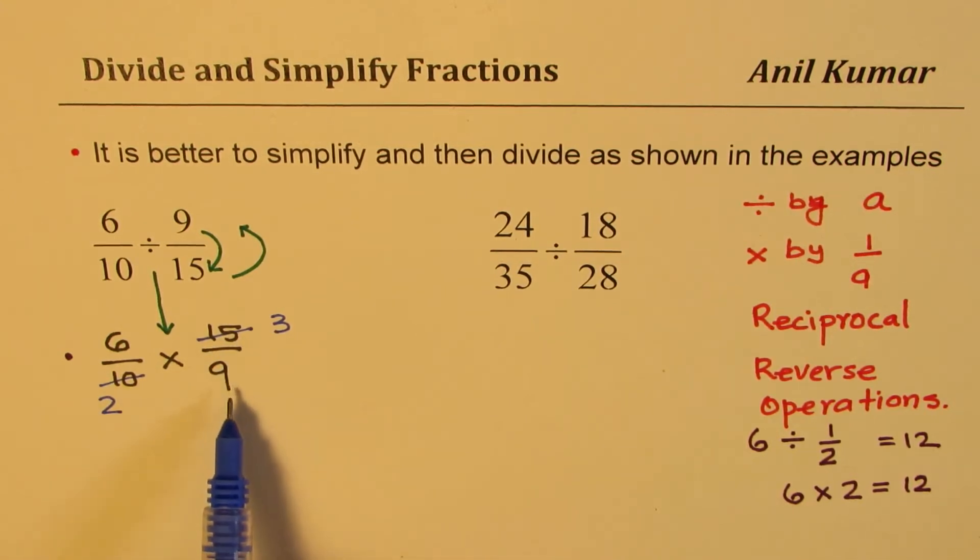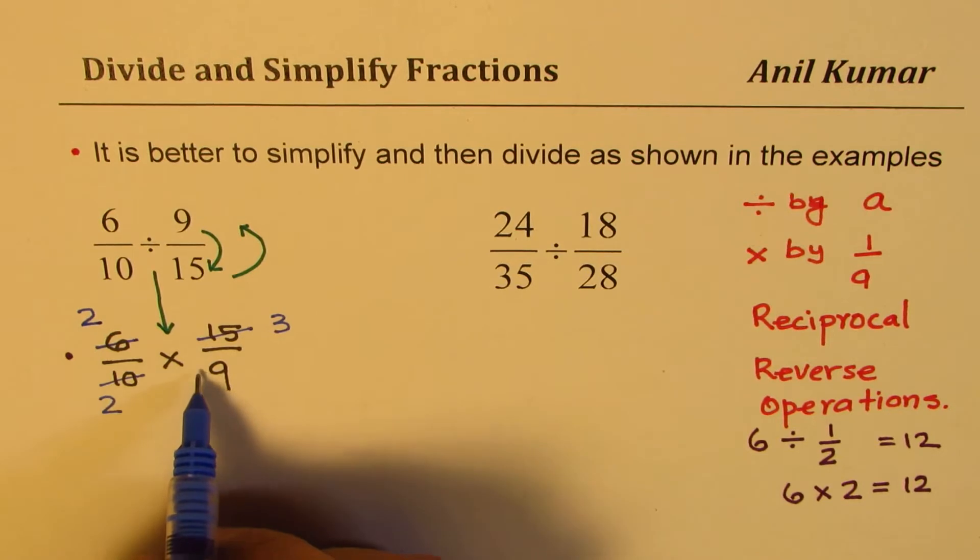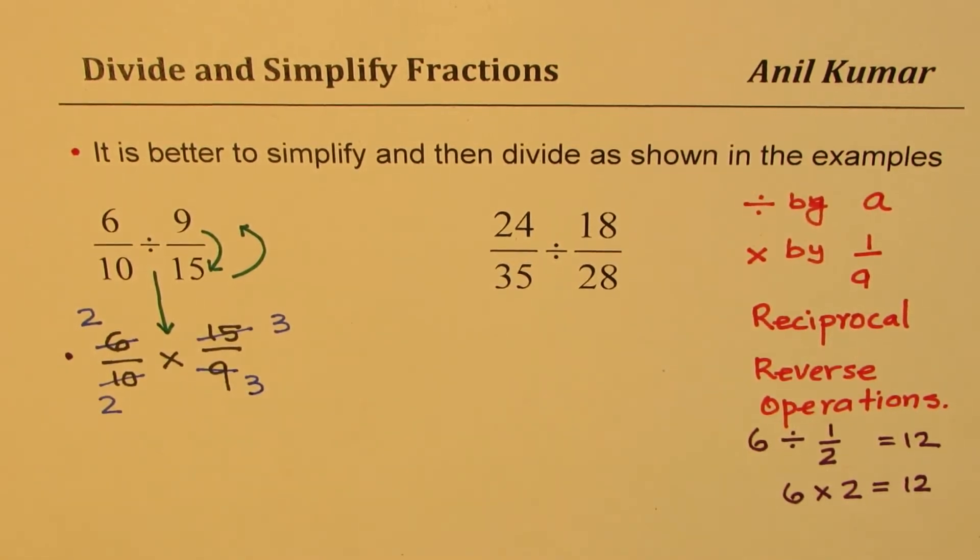So dividing numerator and denominator by the same number is permitted. Similarly, we could also divide 6 and 9 both of them by 3. So let's do it. So we can divide this by 3: 3 times 2 is 6 and 3 times 3 is 9, correct?